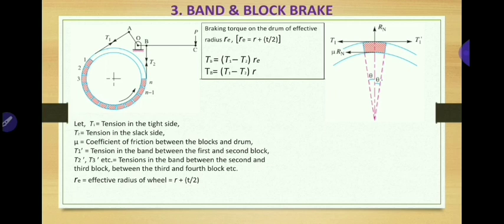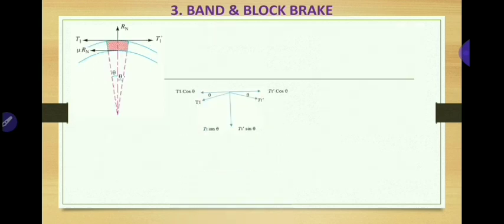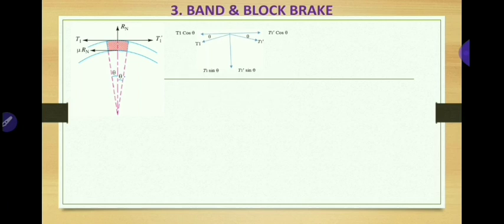Now consider the first block on which some forces are acting. The included angle over the first block is 2θ. Under equilibrium, four forces act on the first block: the tension in the tight side T1, the tension in the band between the first and second block T1', the normal reaction force of the drum on the block Rn in the upward direction, and the friction force μ × Rn acting in exactly the opposite direction to T1'.